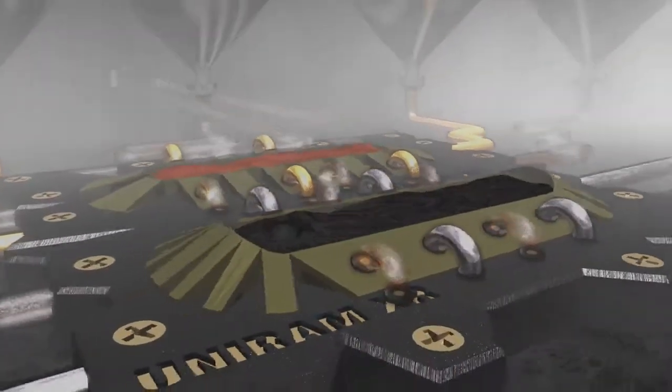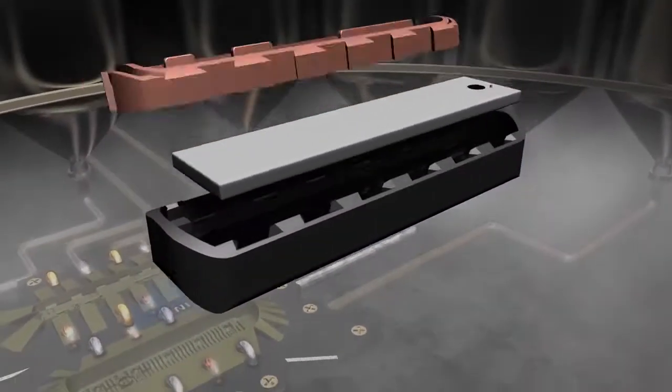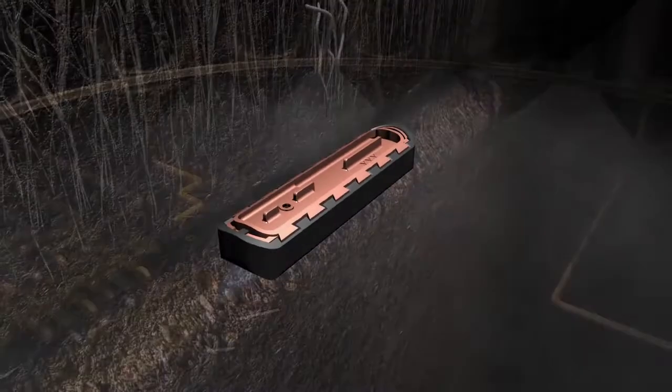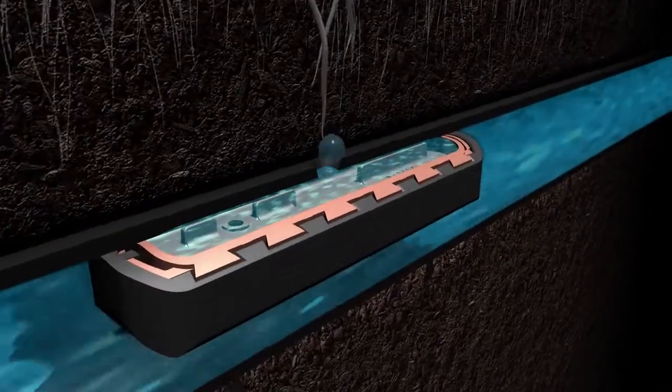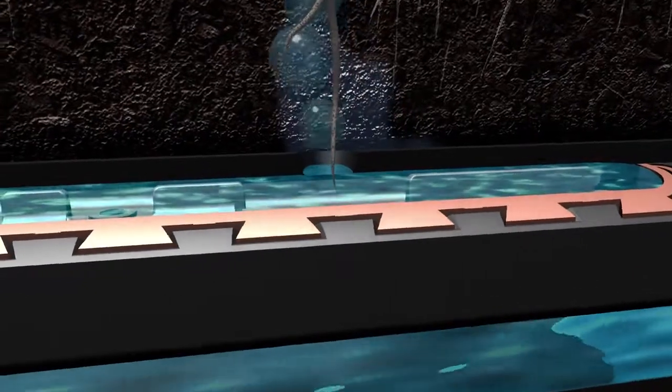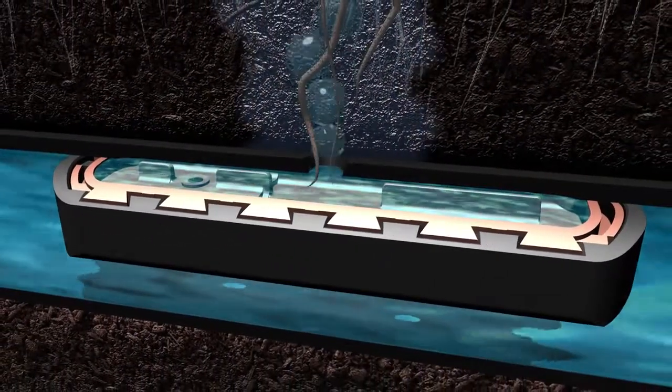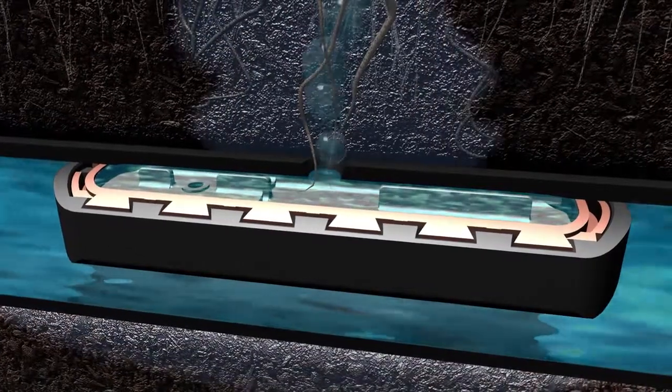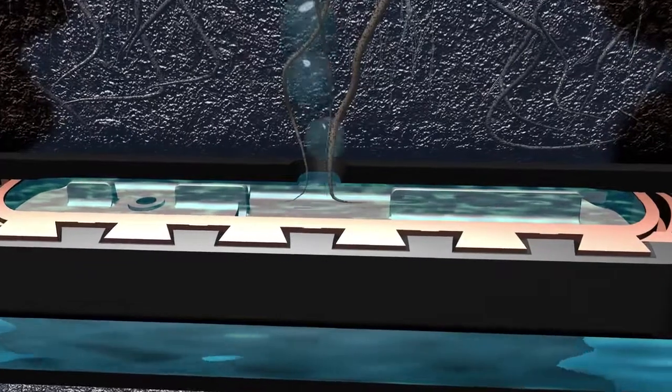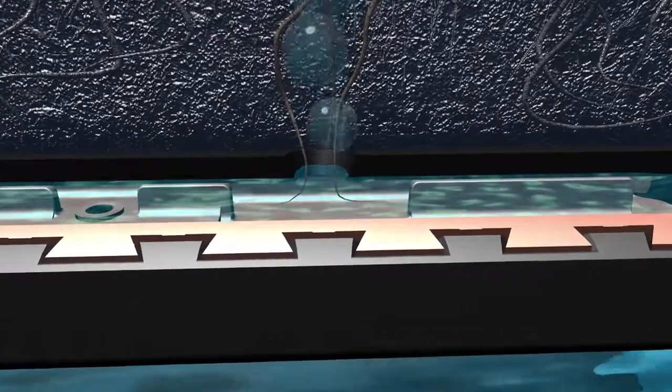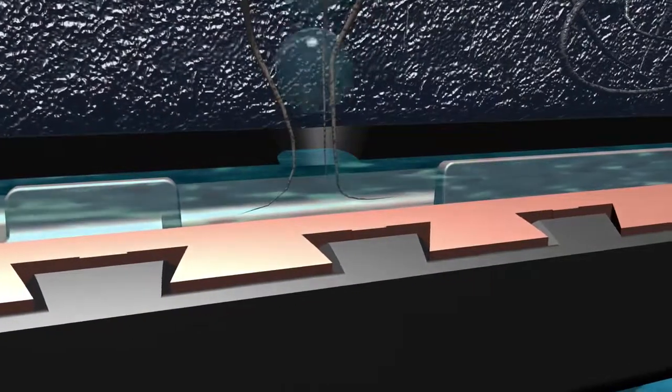As the only dripper line that infuses copper oxide directly into the mold of each emitter, Uniram XR deters even the most aggressive roots with protection that extends beyond the initial entry point and throughout the entire emitter. By embedding copper oxide into the material used to create each emitter during the manufacturing process, the dripper line's root-resistant properties never leach out of the emitter, providing a long-lasting root barrier for subsurface drip irrigation systems.